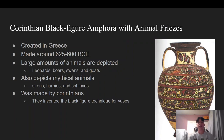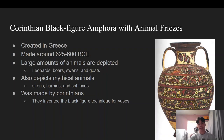Next I will be talking about the Corinthian black figure vase with animal friezes. This work of art was created in Greece and made around 625 to 600 BCE. This vase shows many different kinds of animals. The animals depicted in this vase are leopards, boars, swans, and goats. But it doesn't just show regular animals — there are also some mythical animals depicted in this vase, which consist of sirens, harpies, and sphinxes.